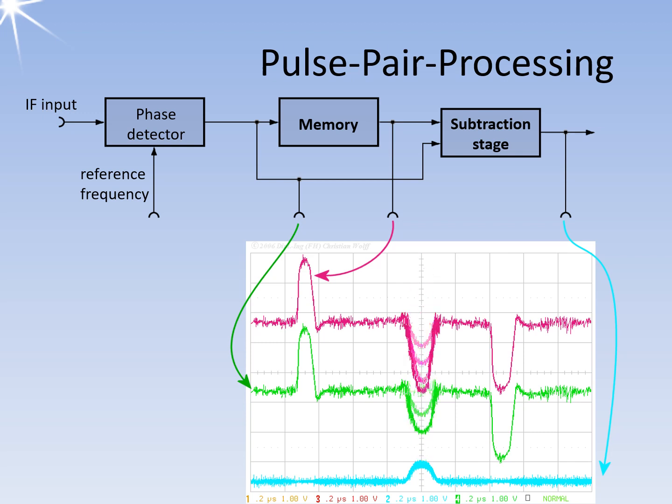Echo signals of a complete pulse period are stored in a suitable analog or digital memory and compared with the echo signals of the subsequent pulse period. In the subtraction stage, fixed targets cancel each other out. The subtraction of both pulse periods from a bipolar video results in a non-zero amplitude.